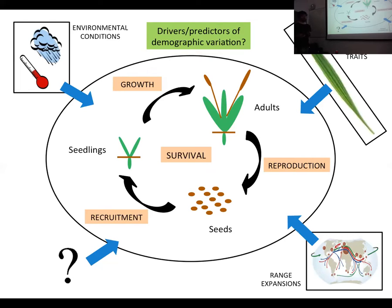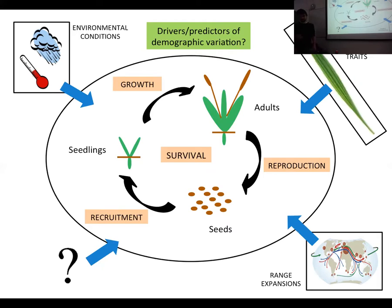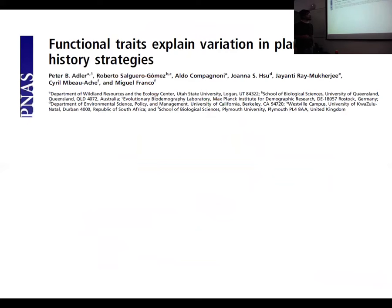There are different possible predictors we can consider. One is the environmental conditions of the populations. We can also think about whether functional traits can be added to the models — for example, specific leaf area. Of course, we are very interested in analyzing the differences in demography between the native and non-native ranges.